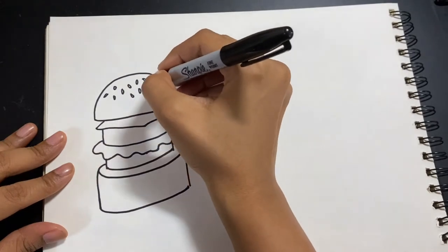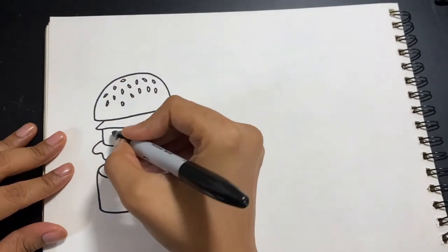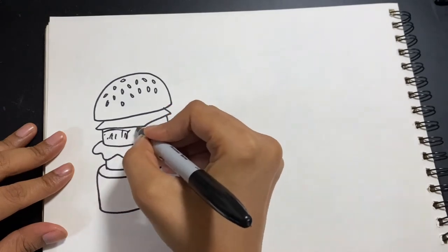I'm adding some sesame seeds and then I'm going to add some details inside and going to create the expression for my burger.